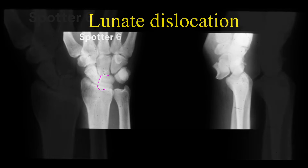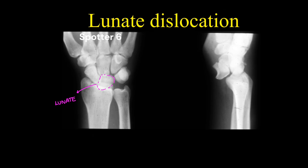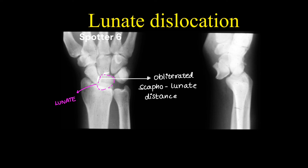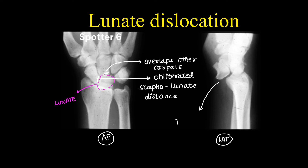Here we have a lunate dislocation. This is the lunate bone — we can see it overlapping over the scaphoid, obliterating the scapholunate distance, and it is overlapping the capitate also. On the lateral view, we can definitively see the anterior displacement of the lunate compared to the line going through the radius and third metacarpal.